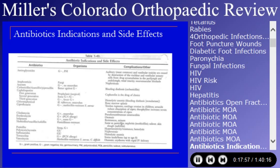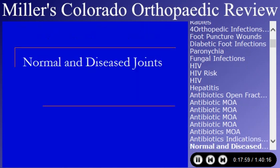The next topic is by far the biggest: normal and diseased joints. It's Chapter 2 in the Miller Review book — a long, involved chapter with a lot of material and a lot of very popular material on the test. The first part of the lecture will cover pure basic science, and the second two-thirds will be largely clinical, talking about joint diseases.